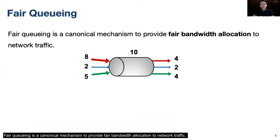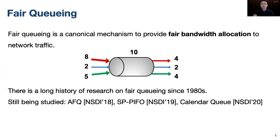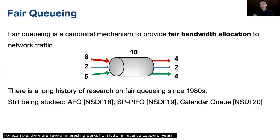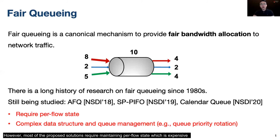Fair queuing is a canonical mechanism to provide fair bandwidth allocation to network traffic. There has been a long history of research on fair queuing, and until recent years there are still some very nice works about it. For example, there are several interesting works from NSDI in recent years. These works can be applied to implement fair queuing using existing hardware. However, most of the proposed solutions require maintaining per-flow state, which is expensive, or they may need complex queue management, which is not supported purely in the data plane yet.